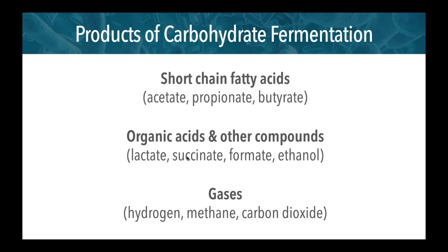I want to focus on some of the key products of carbohydrate fermentation — the process whereby microbes break down carbohydrates and generate products. At the top of the list are the short-chain fatty acids: acetate, propionate, and butyrate, which have really important health effects. Microbes also produce a wide range of other organic acids including lactate, succinate, formate, and ethanol. They can also produce gases, particularly hydrogen, methane, and carbon dioxide, which can have certain symptomatic effects.